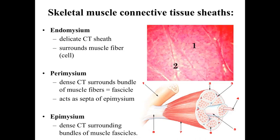We're going to have an endomysium. The endomysium is essentially a delicate connective tissue sheath surrounding and supporting an individual muscle fiber, or individual muscle cell. That's similar to what we had with the neuromysium surrounding and supporting the Schwann cells. We're going to have a perimysium — a denser connective tissue which will surround and establish a bundle of muscle fibers, referred to as a fascicle.